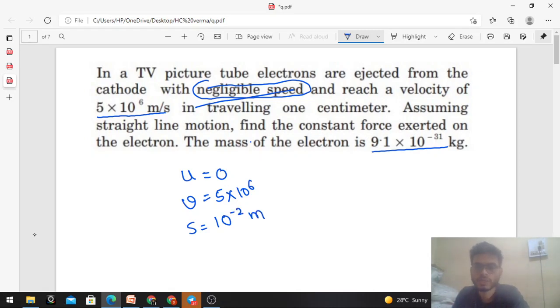We need to find constant force. Force equals mass times acceleration, F = ma. Mass is given, so we need to find acceleration. Since we have constant acceleration, we can use the three equations of motion for uniform acceleration.